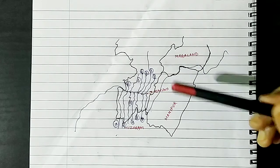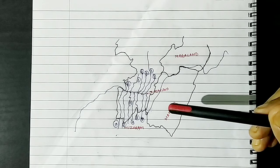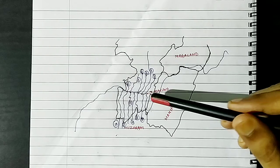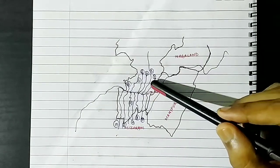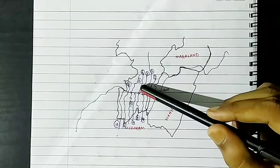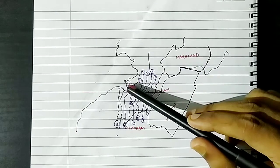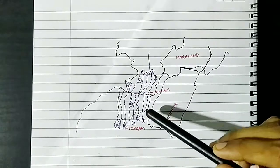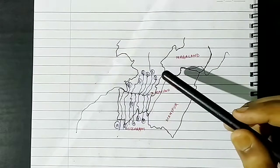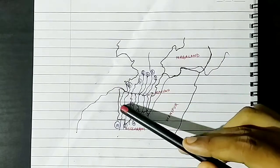The catchment area of Barak is about 50,000 sq km within Northeast India, and in Assam it covers about 8,000 sq km. It has about 12 major tributaries. The right bank tributaries are: Labakh, Madhura, Dalu, Jayantia, Lorang, and Sonai — mostly emerging from the Barail range. The left bank tributaries are: Rukhi, Katakhal, Thaleswari, Singla, Longgai, and the Barak itself.